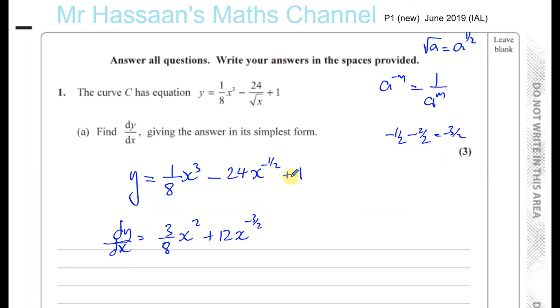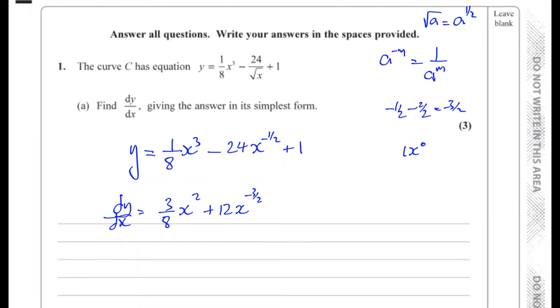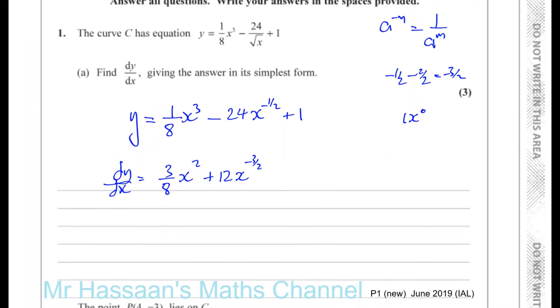And when you differentiate a constant, it becomes 0. So you don't write anything there. We can think of it as 1, x to the power of 0. When you multiply by the power, you get 0, so the whole thing becomes 0. So that's dy/dx. That's part A complete. Giving the answer in its simplest form, that's perfectly fine. If you want to be a bit extra, you could write this as plus 12 over x to the power of 3/2 if you want to. But both of those are perfectly acceptable as answers.